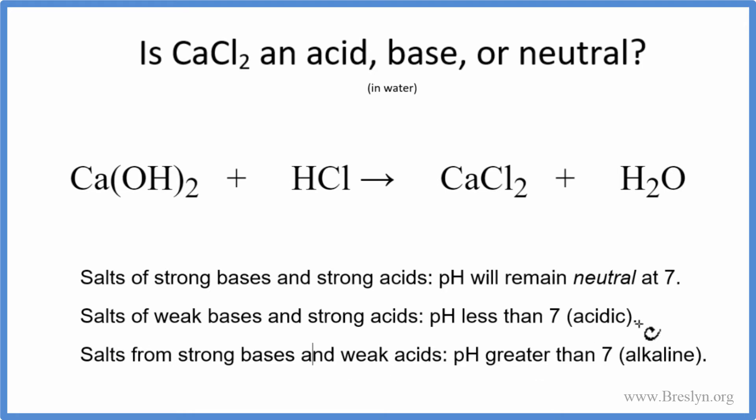So if we look at our list of rules here, we know that calcium hydroxide, that's a strong base, and hydrochloric acid, that's a strong acid. So if we have our strong base and our strong acid, the pH of the solution that results, that's going to be neutral. So we'll have a pH of 7 for this calcium chloride solution.